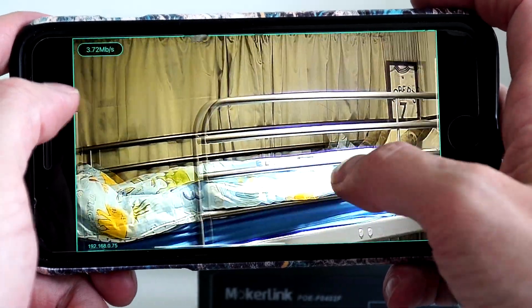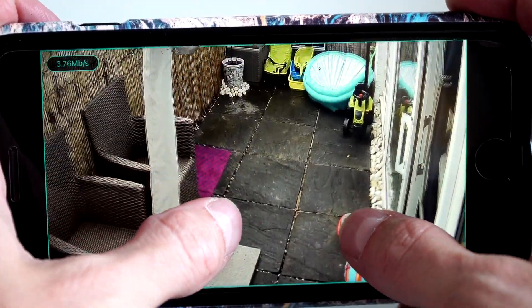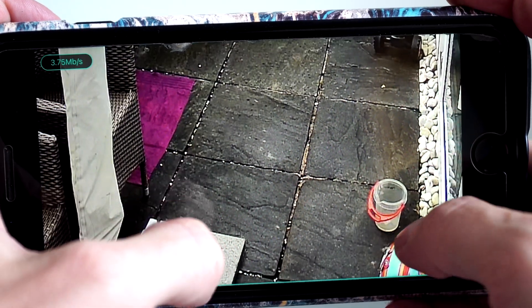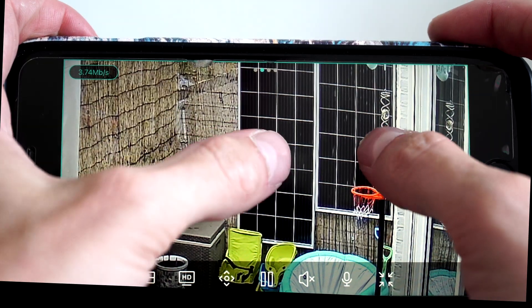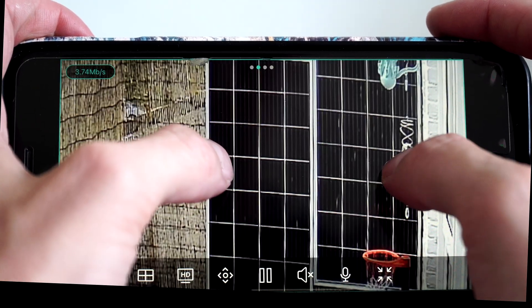These cameras have a 2.8mm lens, and a 95 degree wide view angle, which is what I like most about these cameras, allowing you to capture more in your field of view. As my balcony is only narrow, it does a good job in capturing most things in it.